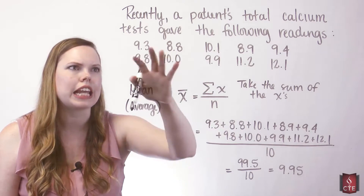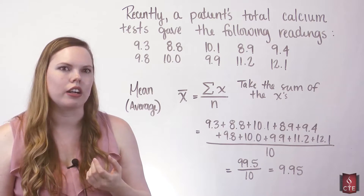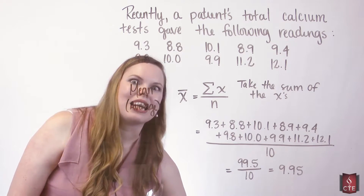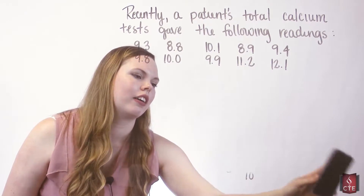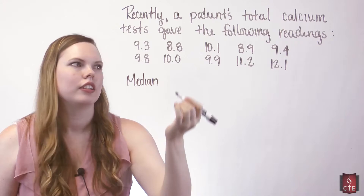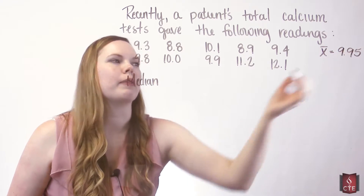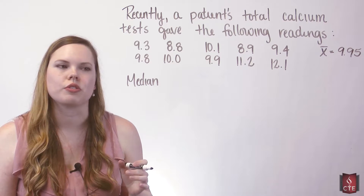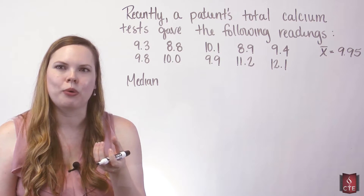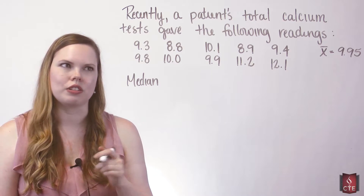If you look at that data, the mean should be a measure of central tendency, so it should land within this data and make sense as the center. We can see the center better when we get the data in order, which we need to do for our median. Our mean was 9.95 — I'll put that up here for comparison. The median is the middle — the middle data value — and we call it the midpoint of the data array, which is always the data arranged from least to greatest.